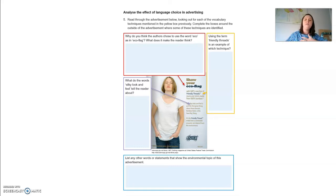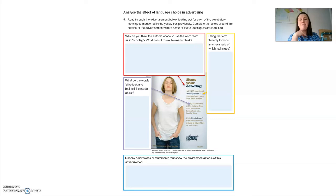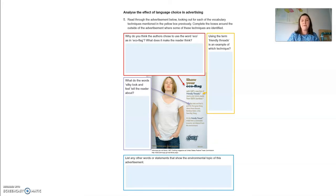Now we're going to use all of that knowledge and bring it into the eco flag advertisement. We've used this advertisement a few times, so hopefully that will make the process easier. We're going to analyze the effect of language choices in this advertisement. Read through looking for each of the vocabulary techniques mentioned in the yellow box. Question: why did the authors choose to use the word 'eco' as in 'eco flag,' and what does it make the reader think?